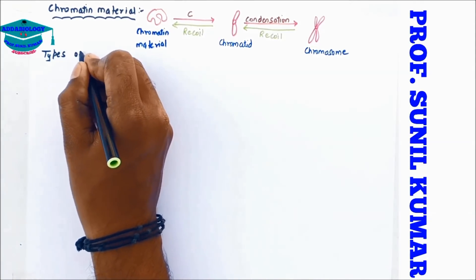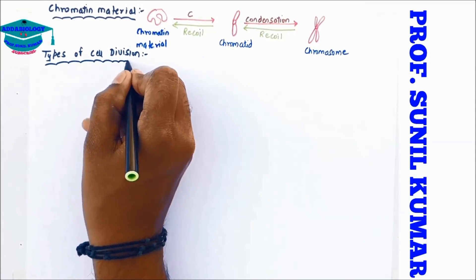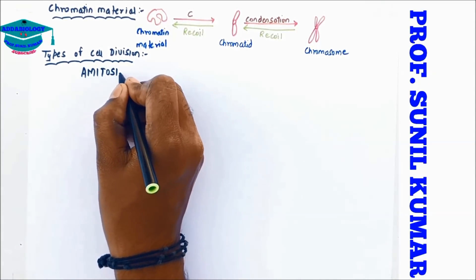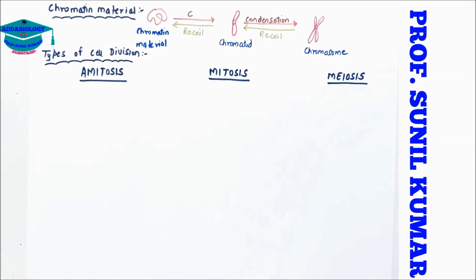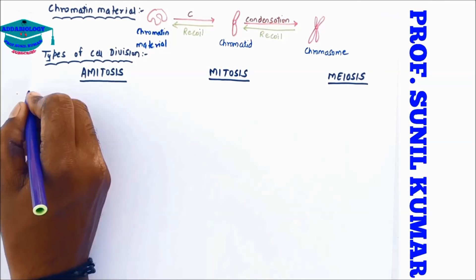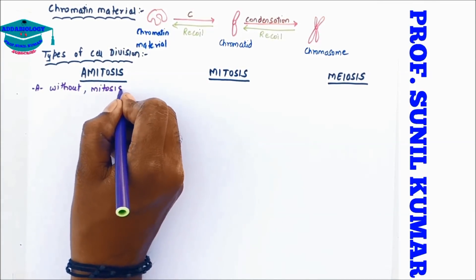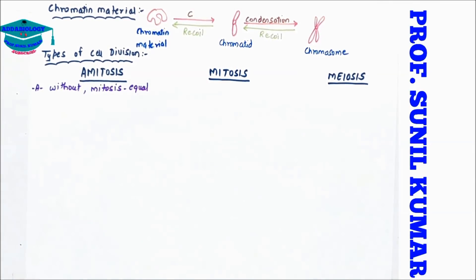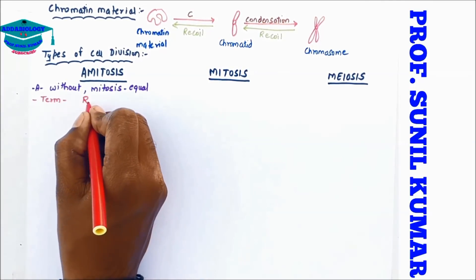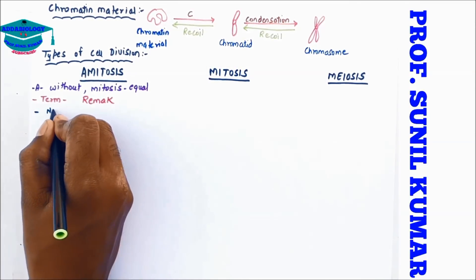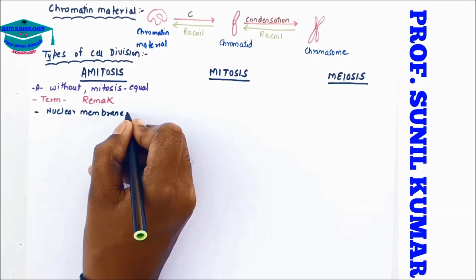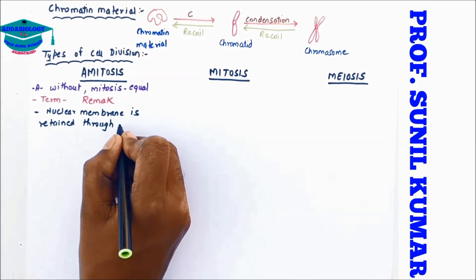This is the second part of cell division. In this part we are going to discuss the types of cell division. There are three types: amitosis, mitosis, and meiosis. When we talk about amitosis, we need to understand the meaning of the word. 'A' means without and 'mitosis' means equal — it means in amitosis there is no equational division. The term amitosis was given by scientist REMAC.